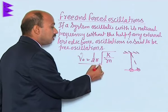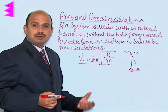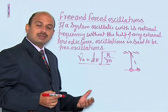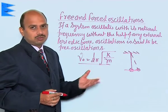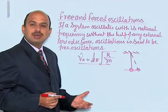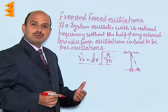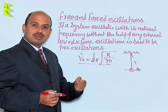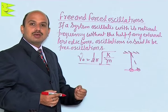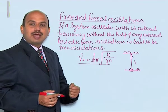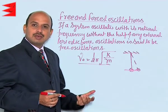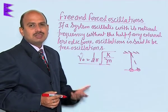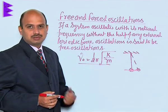Examples of free oscillations: one is the pendulum — if it is displaced and made free, it oscillates with its own frequency. Also, the prongs of the tuning fork: if these prongs are struck with a rubber pad and made to oscillate, then they oscillate with their own natural frequency. These are the examples of free oscillations.